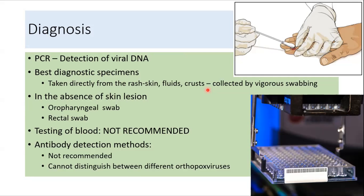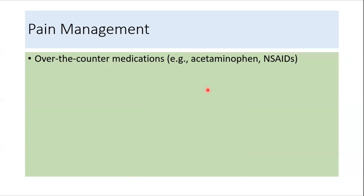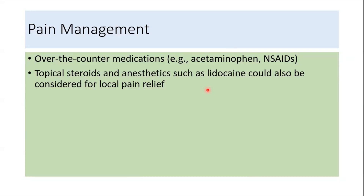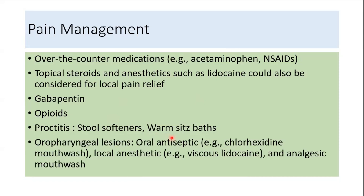Treatment consists of early and supportive care, pain management, care of the rash, prevention of complications, and isolation of the patient. For pain management, over-the-counter medications like acetaminophen and NSAIDs can be used, or topical steroids and anesthetics like lidocaine. If pain is very severe, gabapentin or opioids may be used. For proctitis, stool softeners and warm sitz baths can be used.